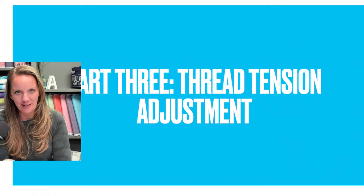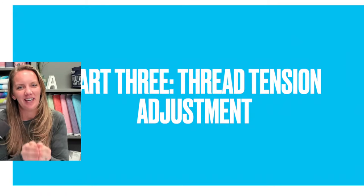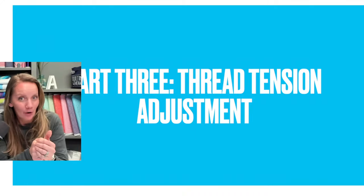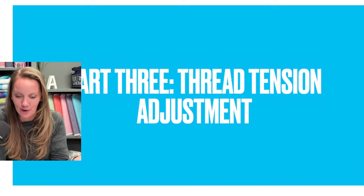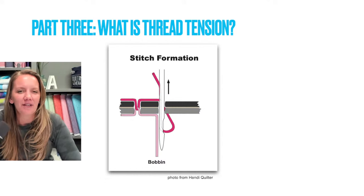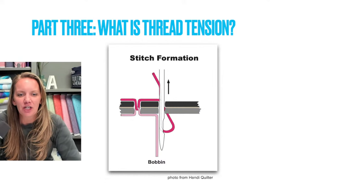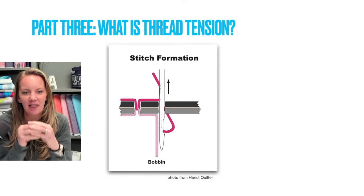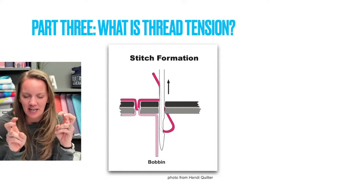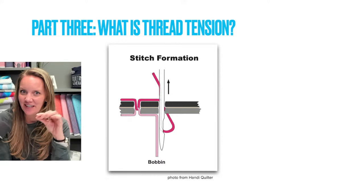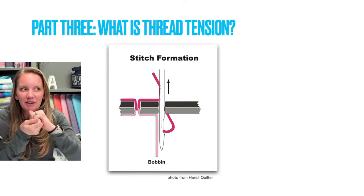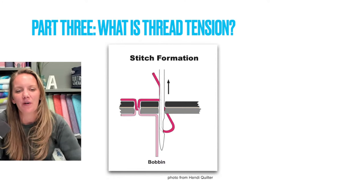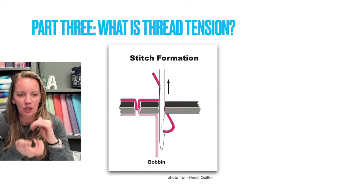Once you have your needle and your thread, we get to the good stuff — the tension adjustment. How do I adjust tension and, more importantly, how do I troubleshoot when things aren't going well? First, what is tension? It's when that top thread and that bobbin thread come together in the middle of the quilt — that is perfect tension. There's not a whole lot of margin there. If the thread is joining at the top or the bottom of the quilt, that is poor tension.